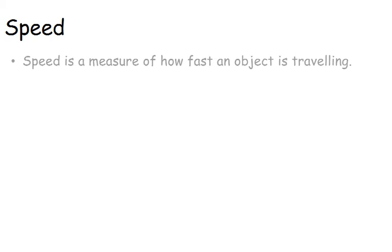Let's look at something we should all be familiar with. Speed is a measure of how fast an object is travelling. It's a scalar, not a vector, so it doesn't care about what direction the object is going in.